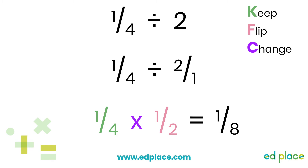Have a look back at the first question: one-quarter divided by two. Now look at the answer: one-eighth. Do you notice anything about the numbers? The numerator has stayed the same — one — and the denominator, four, has been multiplied by the whole number, two, to get eight. I wonder if this works with other questions. Let's see, shall we?